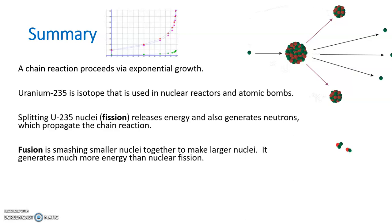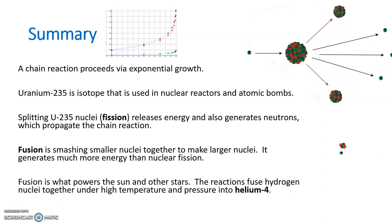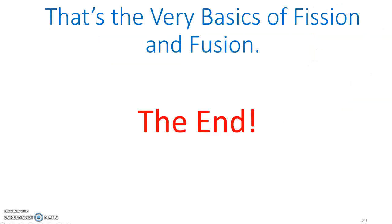Fusion we also briefly covered - smashing smaller nuclei together to make bigger ones. It generates a lot more energy, and when that happens you end up having the product of helium-4 in the Sun and other stars. That is it on the very basics of fission and fusion.